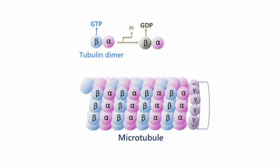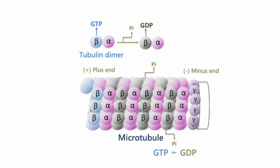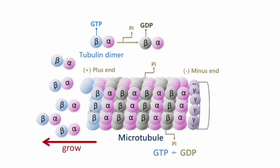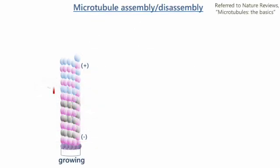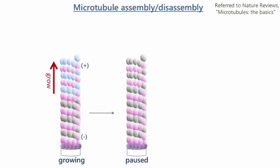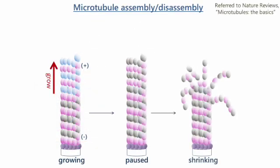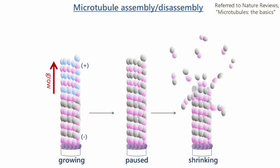GTP bound to beta tubulin can be hydrolyzed when GTP tubulin is added to the microtubule lattice. The tubulin dimer binds to the plus end and elongates the microtubule. During cell division, microtubules and spindles constantly grow and shorten by addition and loss of the enzyme tubulin GTPase from their tip.